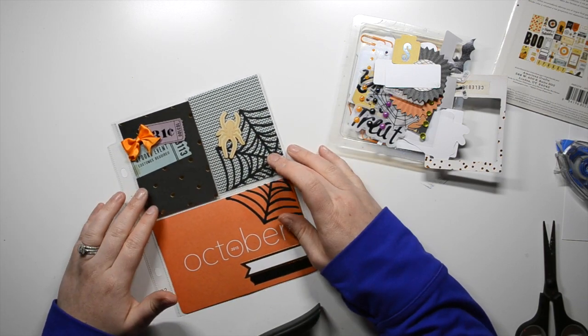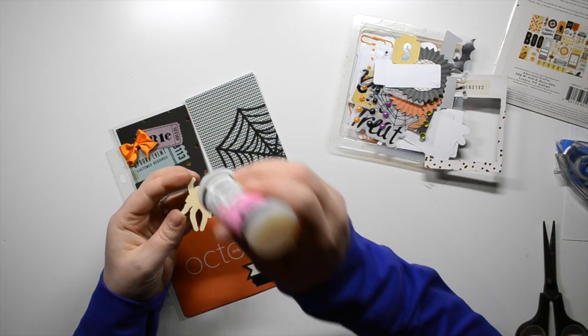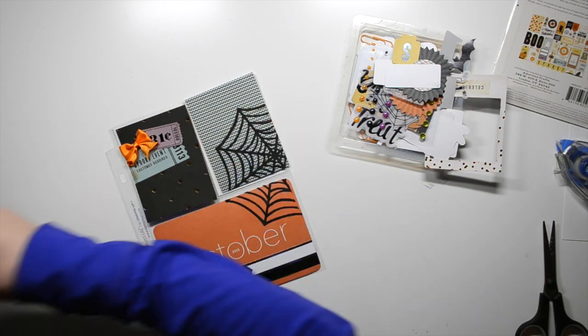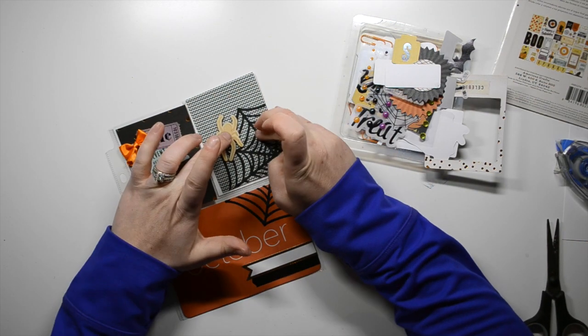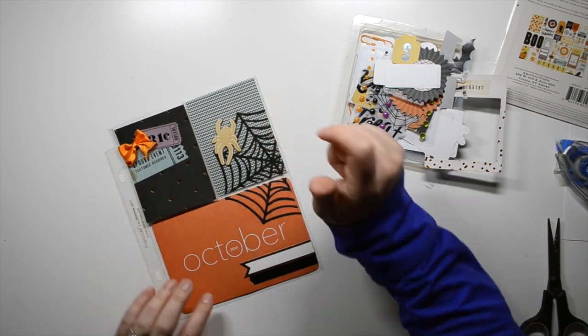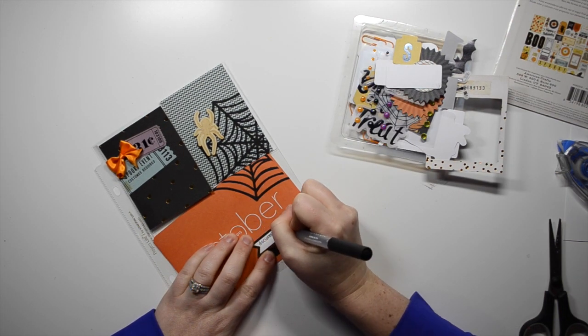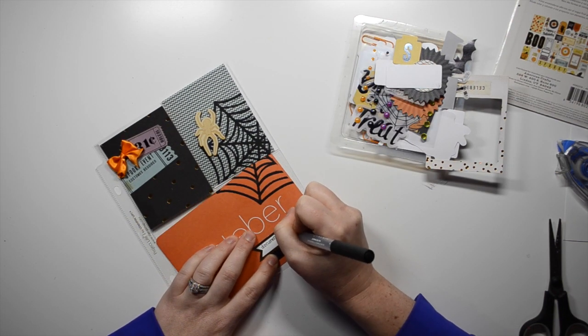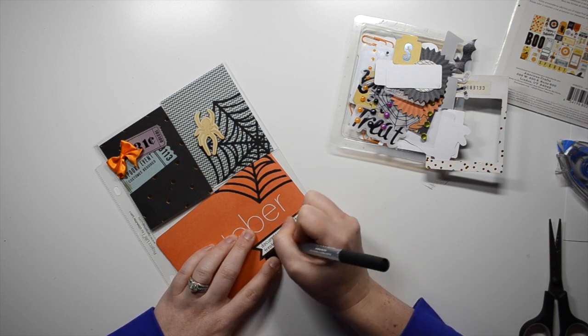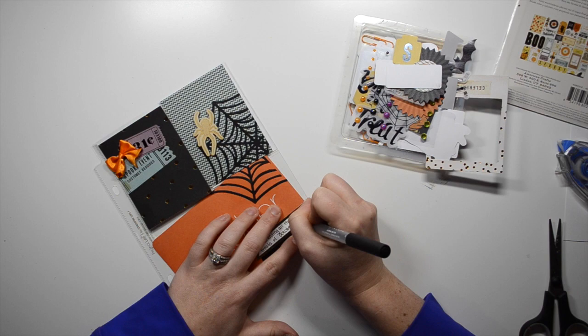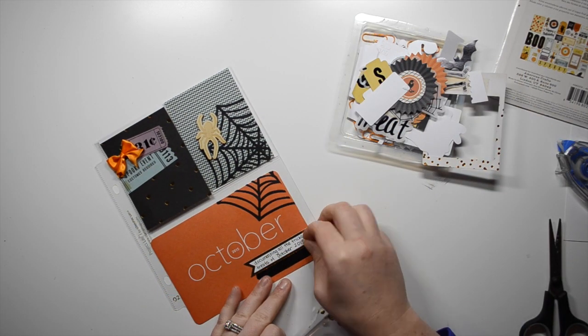And I just layer them together with my tiny attacher and add the bow. The bow is a little bit bulky, so I end up moving it and putting it on the outside of the page protector a little bit later. So that's pretty much all the embellishments I do. I'm adding a little bit of journaling. It's just saying, documenting the tricks and treats of October 2015. Just a little bit of journaling to just tell people kind of what the album is about.